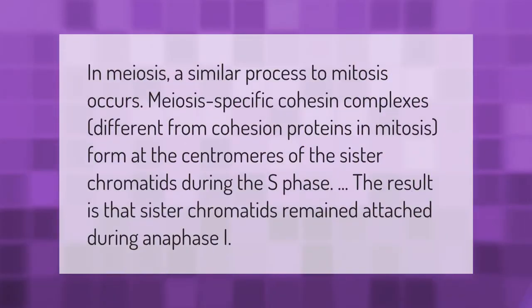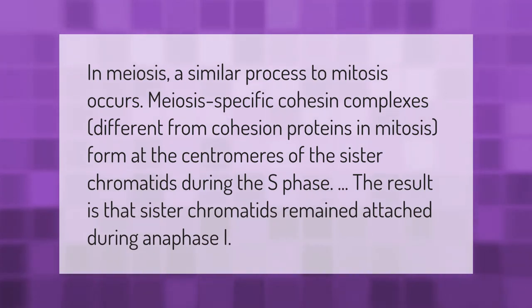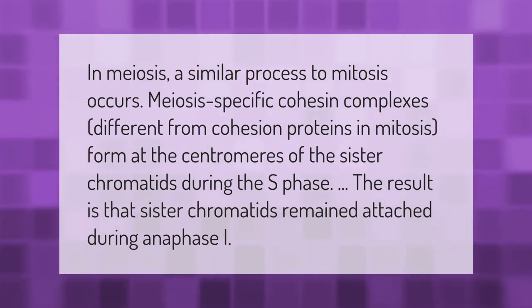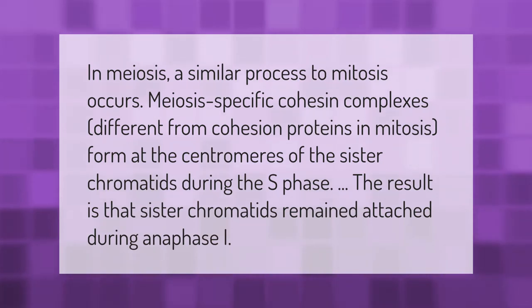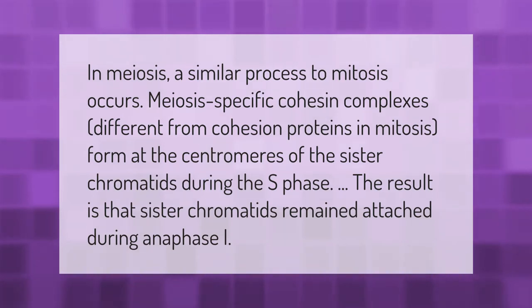In meiosis, a similar process to mitosis occurs. Meiosis-specific cohesin complexes, different from cohesion proteins in mitosis, form at the centromeres of the sister chromatids during the S phase. The result is that sister chromatids remain attached during anaphase I.